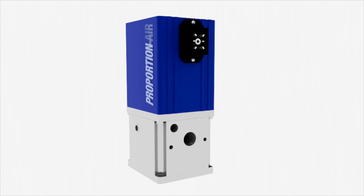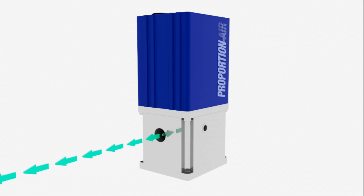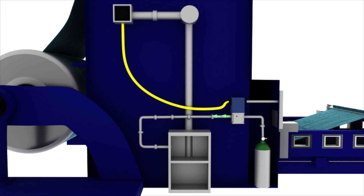WebControl sends a command to the QB3 after air supply is provided. This signal tells the QB3 when to increase or decrease set pressure so the dancer arm can move up and down. Set pressure is sent to a cylinder to move the dancer arm into position for proper web tension.